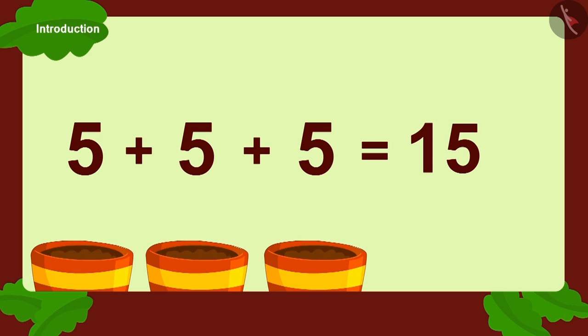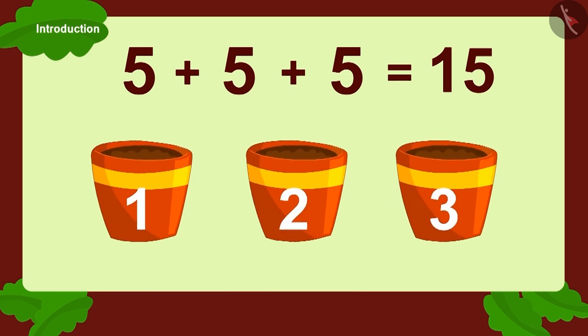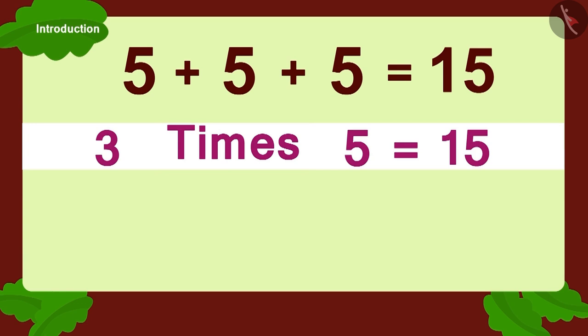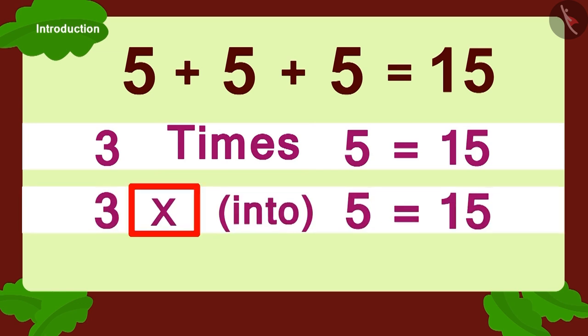Now, how can we write it in a different form? Three times five, or three multiplied with five.